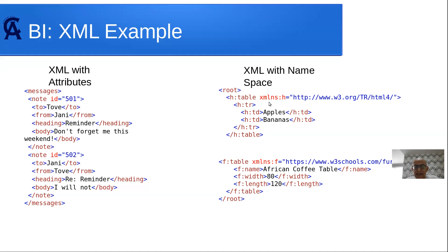In the very top I define a namespace — xmlns:ns means 'XML namespace'. I define 'h' as the namespace and give it a unique link as identifier. You can use any link as long as it is unique, so you can distinguish one namespace from another. This namespace is different from the second one, so I know these are two completely different tables and I shouldn't mix them up.